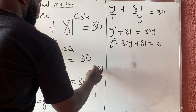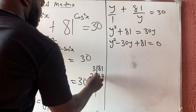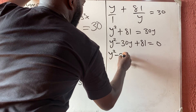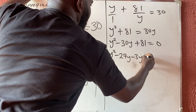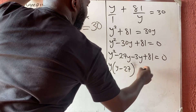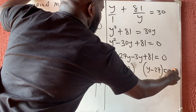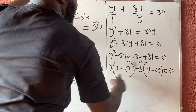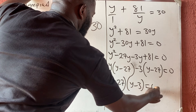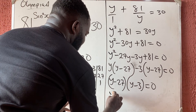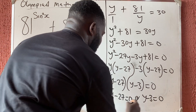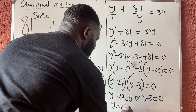Factoring: we need two numbers that multiply to 81 and add to 30 — that is 27 and 3. So we get y squared minus 27y minus 3y plus 81 equals 0, which factors as (y minus 27)(y minus 3) equals 0. This implies y minus 27 equals 0 or y minus 3 equals 0.